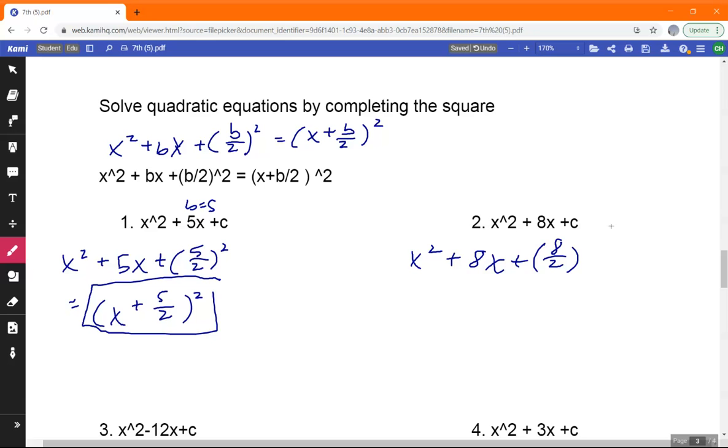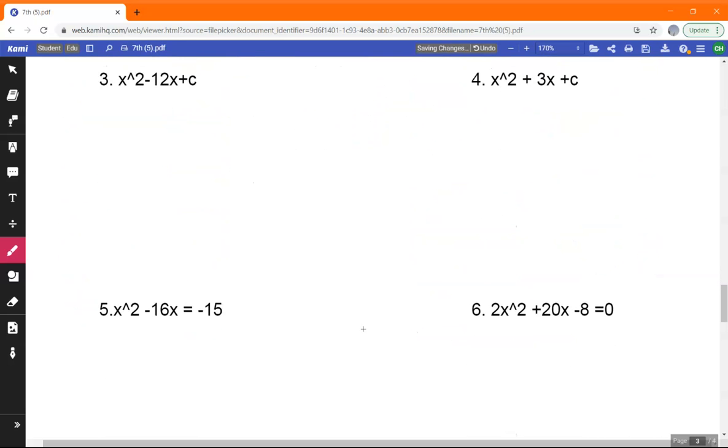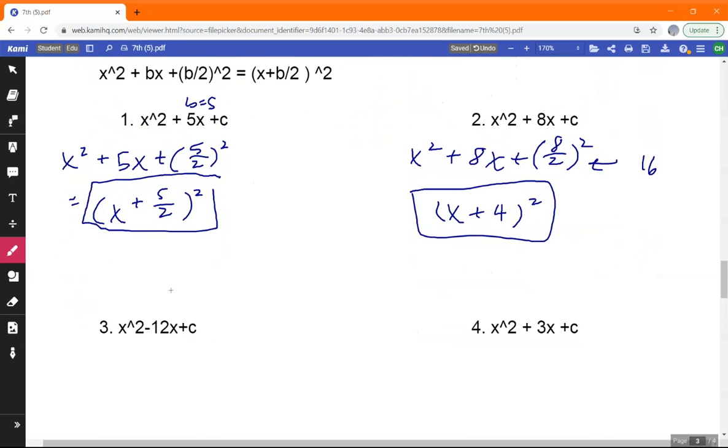x squared plus 8x plus 8 over 2. Okay, I'm sorry about that. Okay, over 2 squared. Well, if we look at that, that'd be 4 times 2, so that'd be 16. So that'd be x plus 4 squared. Well, it'll just be 4 actually. Like that.